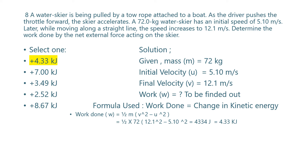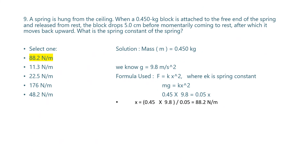Putting in the values: one-half times 72 times the quantity 12.1 squared minus 5.10 squared. Solving this gives approximately 4333 joules, or about 4.333 kilojoules, since one kilojoule equals 1000 joules.